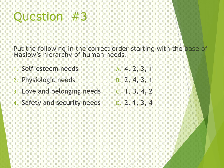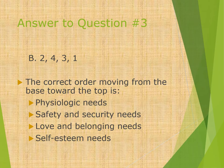Question three: Put the following in correct order starting from the base of Maslow's hierarchy of human needs, bottom up: 1) self-esteem needs, 2) physiologic needs, 3) love and belonging needs, 4) safety and security needs. Answer: the correct order from the base upward is physiologic needs, safety and security needs, love and belonging needs, and self-esteem needs.